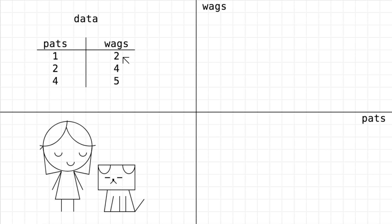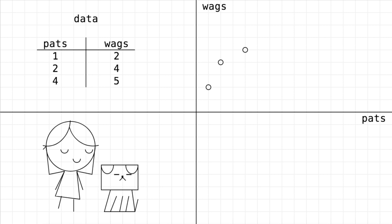We'll plot this first observation here. We'll start at the origin with our point. We're going to take one step to the right because we had one pat this time, and we'll take two steps up because we had two wags. So that's our observation. Now we'll do the same thing for the remaining two observations. And aha! Astonishing!